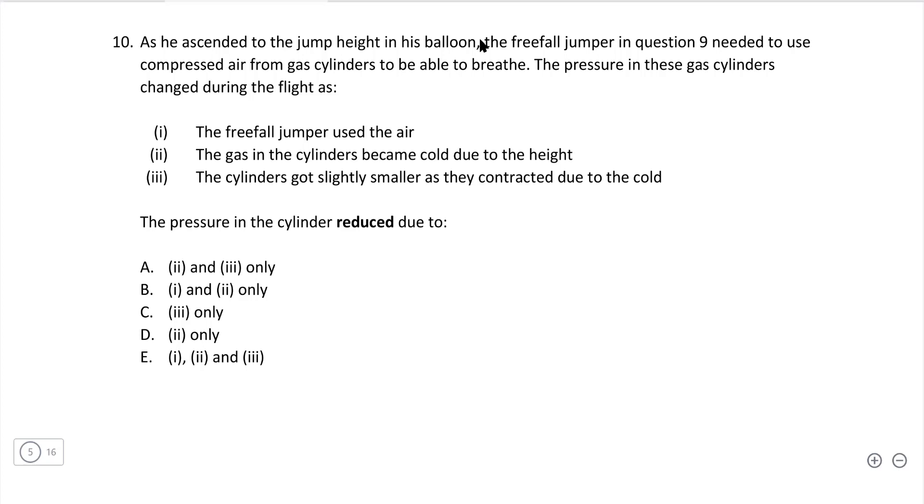The freefall jumper used the air. That will definitely decrease the pressure because it will literally be taking molecules of air out. And that's going to reduce the amount of force in the container. So one will be included. Two, the gas in the cylinders became cold due to the height. Yep, that's the case. So if you have a cylinder and one way to reduce the pressure, just to reduce the number of molecules by breathing them in. But additionally, if they're cold, they vibrate less. So that's also true. The cylinder got slightly smaller as they contracted due to the cold. Well, if the cylinder became slightly smaller, that actually would have increased by some sort of negligible amount of the pressure. So this is not going to contribute to that at all. So one and two only, which means the correct answer is B.